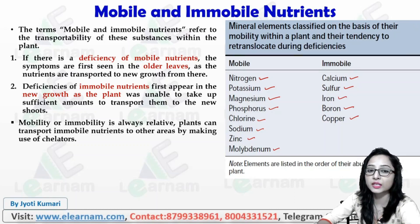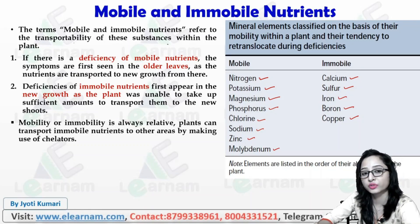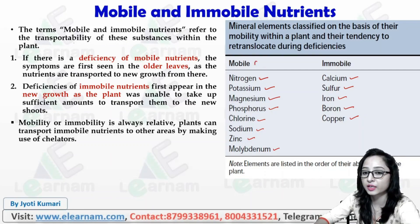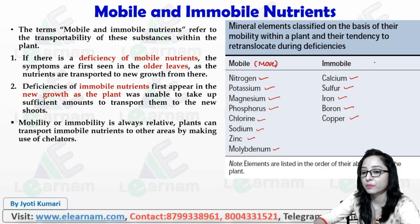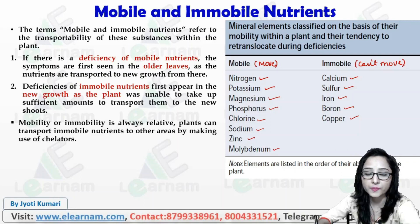The term mobile and immobile nutrients refers to the transportability of these substances within the plant. Mobile elements can move and will be available for the plant, but immobile elements cannot move.